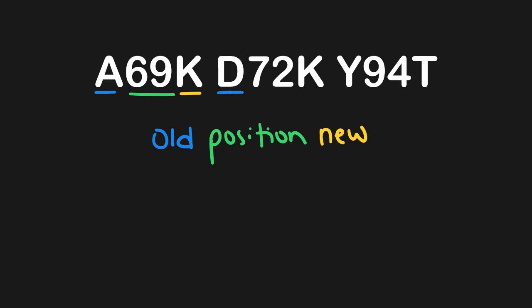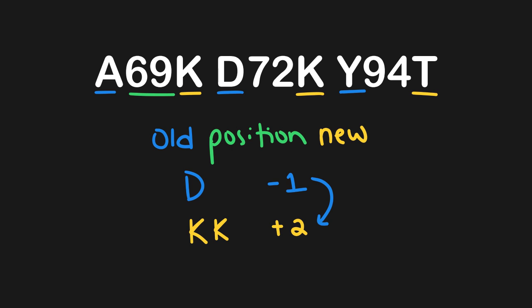Starting with the old sequence — the blue highlighted amino acids — we have alanine (skip) and D (keep), then Y (skip). So we just have D, which is minus one, with no cancellations. For the new sequence — the yellow highlighted amino acids — we include K, include a second K, and skip T. No cancellations, so that's plus two. To find the change, we think on a number line: from minus one to plus two is three positions. So this is a plus three change in charge.